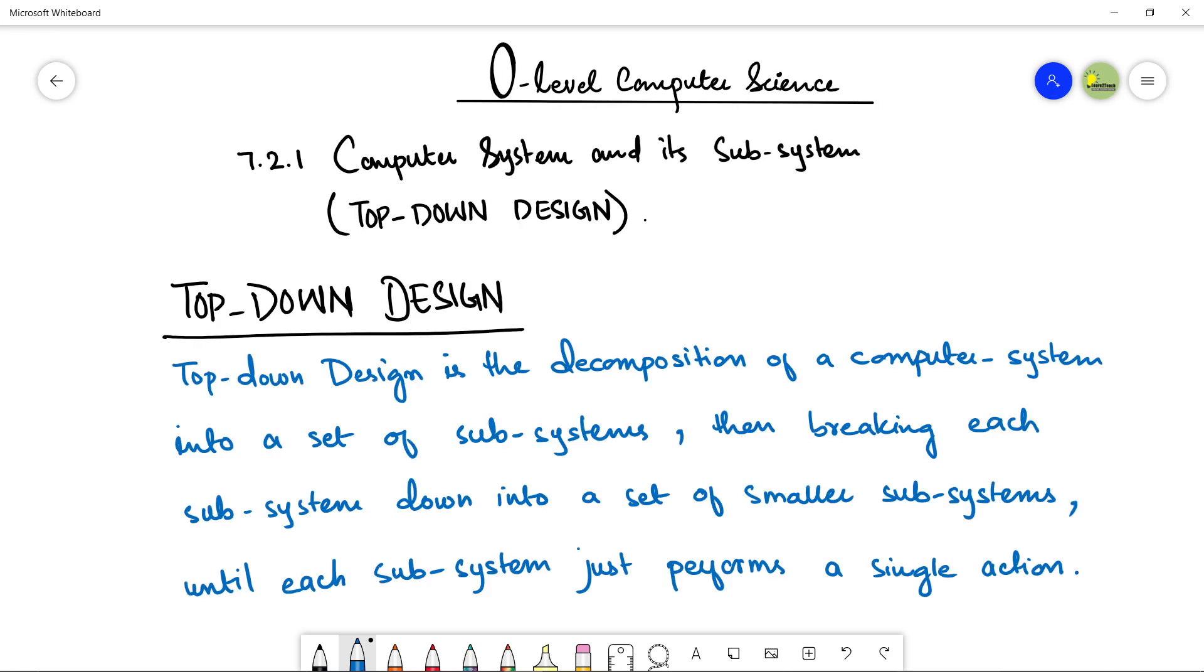Okay, so here we go. A top-down design is a decomposition of a computer system into a set of subsystems. Then breaking each subsystem down into a set of smaller subsystems until each subsystem just performs a single action.